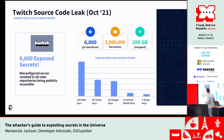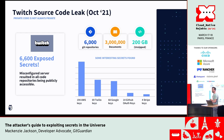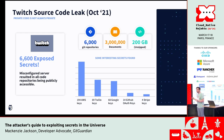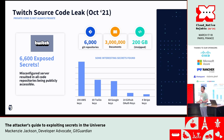Twitch had all their source code exposed — 6,000 repositories, including all the secret projects they were working on — because of a simple misconfiguration where Git repositories were remotely accessible. They were on the better side in terms of secrets, but still had 6,600 exposed secrets in their repositories, including 194 AWS keys and four Stripe keys. Getting access to private source code is a huge priority for attackers.